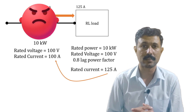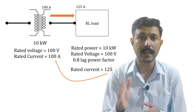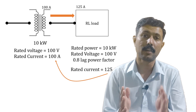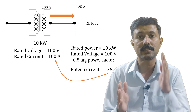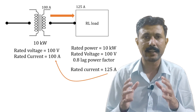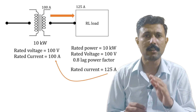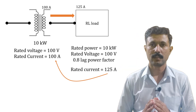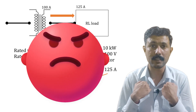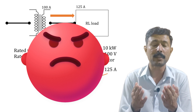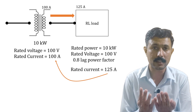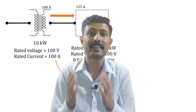This is the disaster: even though the load is also 10 kilowatt, that 10 kilowatt load burns the 10 kilowatt transformer because the current exceeds the rated value. The same thing happens with a capacitive load — it will also burn the transformer. When the transformer burns, the customer gets angry and says: 'You promised me a 10 kilowatt transformer, I connected a 10 kilowatt load, and it burned.' That creates big trouble.